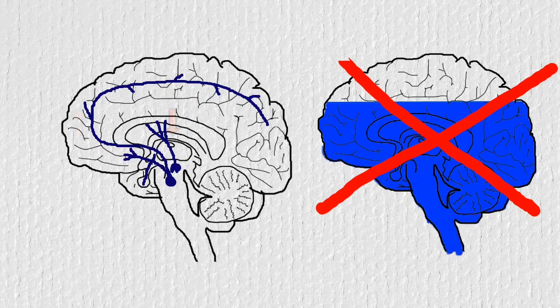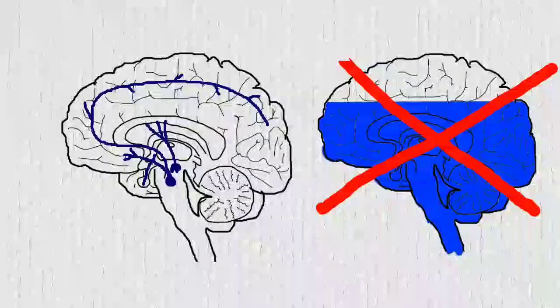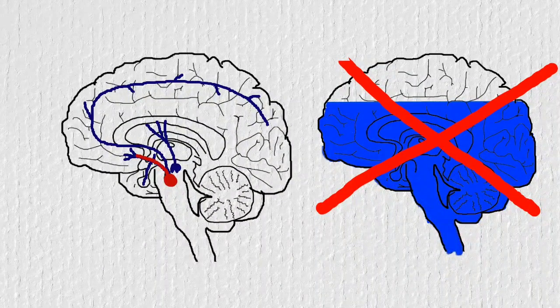When talking about dopamine and happiness, it typically refers to one of those dopamine pathways, the pathway from the VTA to the nucleus accumbens, sometimes called the mesolimbic pathway or reward pathway.